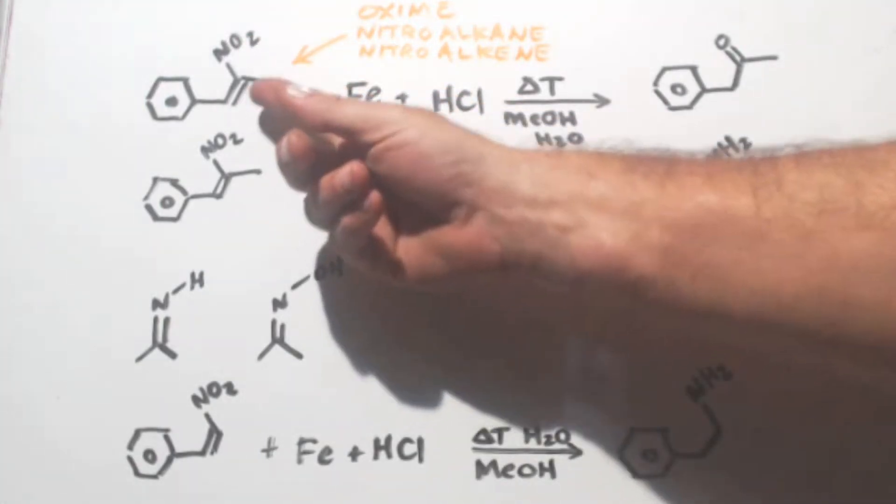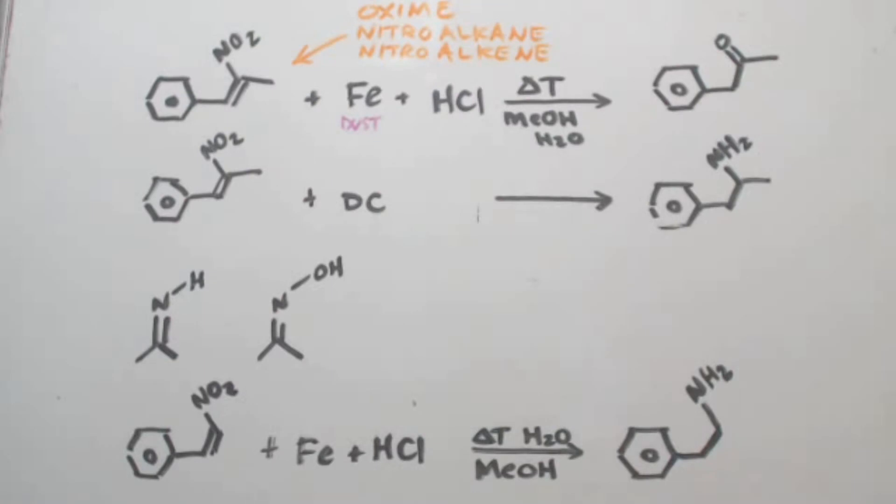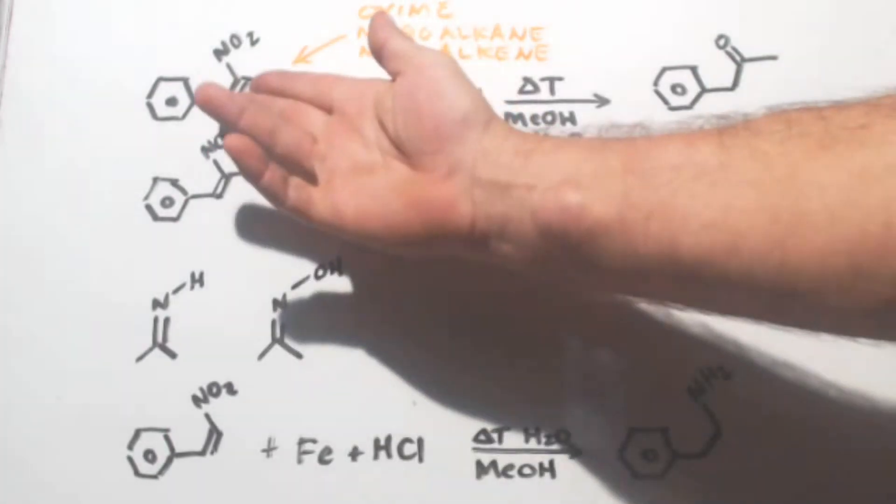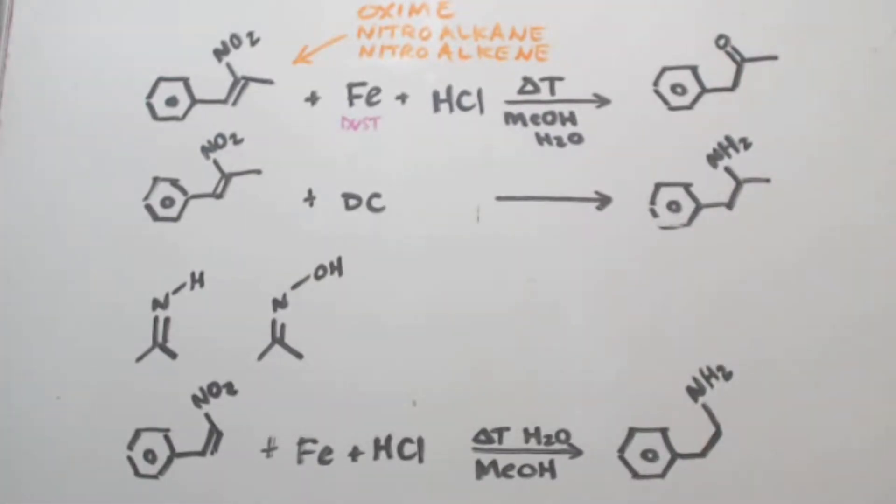As long as you have a nitro group and alkene next to it or double bond next to it, you can make it into a ketone. You don't have to start with this and end up with this. You can use other products. It could be some other R group.